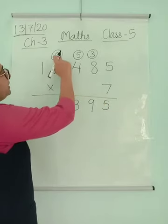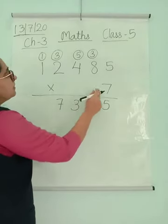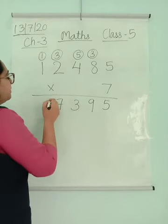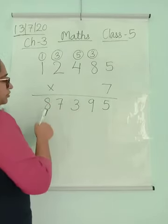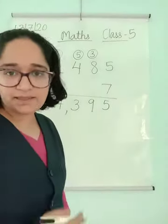7×2 are 14, 14 plus 3 is 17. And 7×1 are 7 plus 1 is 8. So 87,395 is the answer.